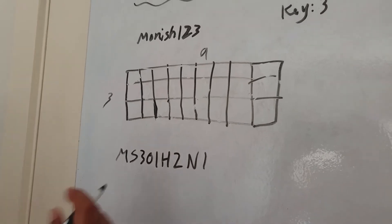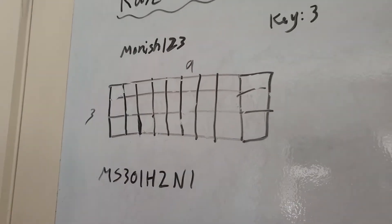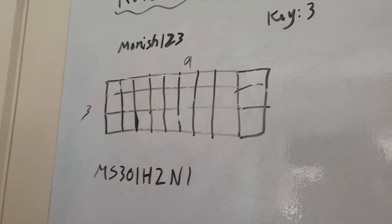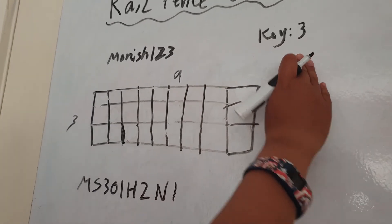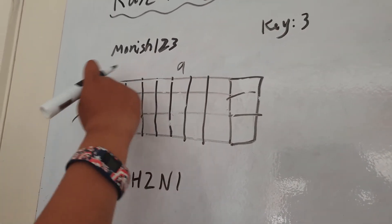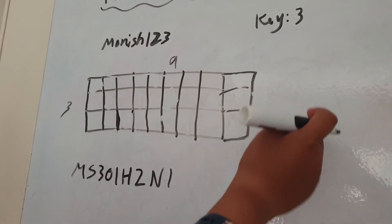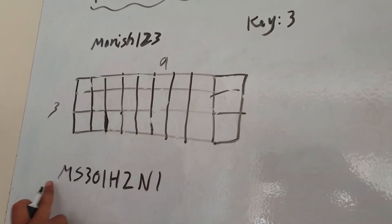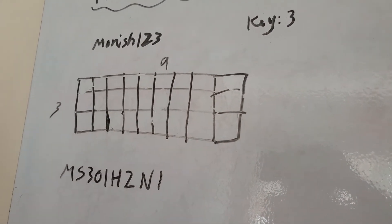So now that you've encrypted it, now I'm going to show you how to decrypt it. So to decrypt it, you need to know the key. And obviously the amount of letters in here is the amount of columns you draw. So the key is three, so you need to have three columns and there's nine here.